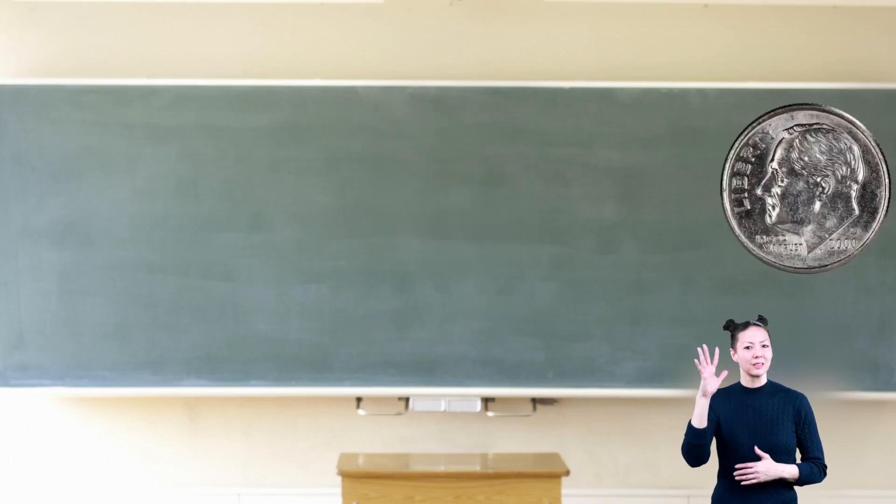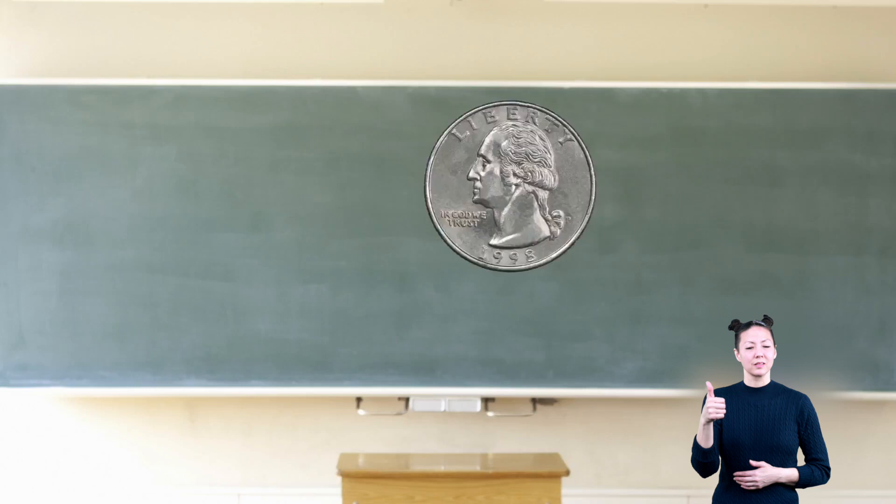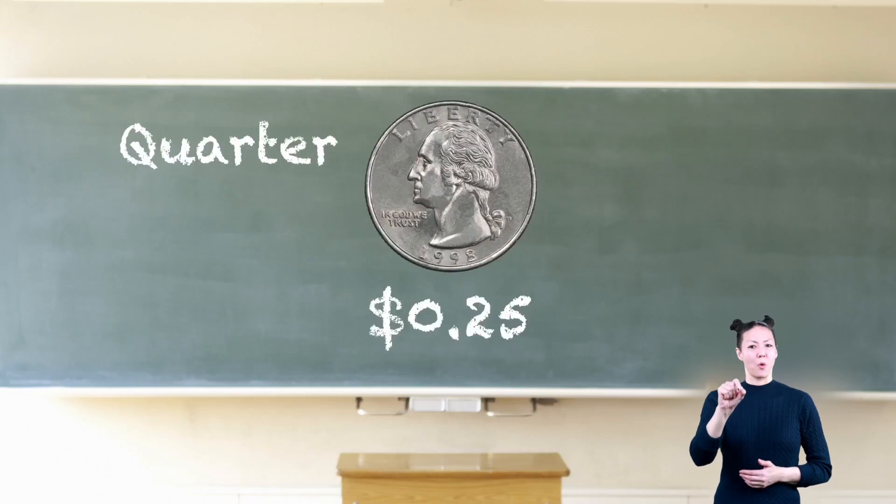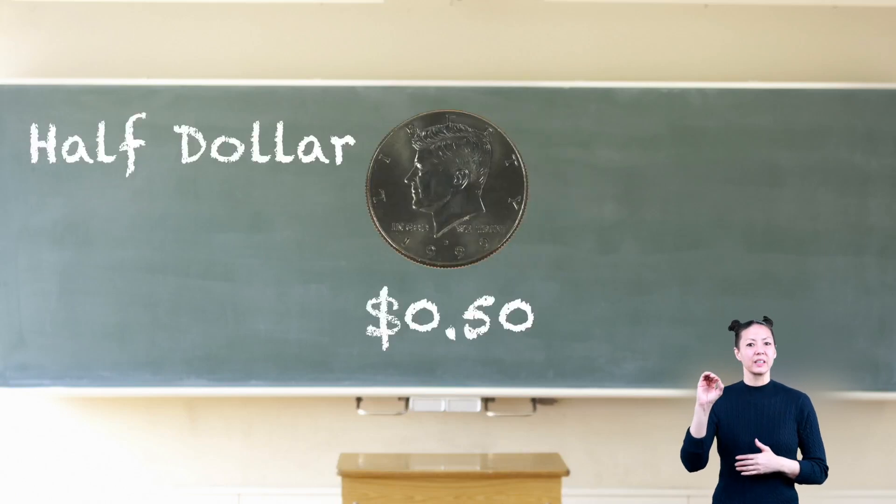Here's a dime. Its decimal amount is 0.10 or ten cents. Here's a quarter. Its decimal amount is 0.25 or a quarter of a dollar. Here's a half dollar or fifty cents. Its decimal amount is 0.50.